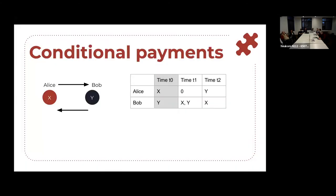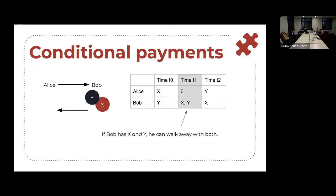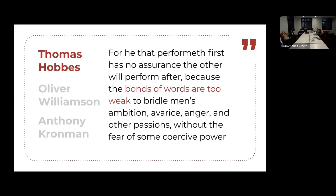Let's say that the payment is actually conditional. Let's say that Alice only wants to give X to Bob if Bob gives Y to Alice. So let's say Alice does the exchange first, but then we have a problem. At time T1, Bob has X and Y, meaning that he could walk away with both. It goes back to Hobbes, saying that the person who performs first has no assurance that the other will perform after, because the bonds of words are too weak.